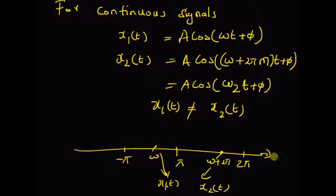To summarize: for discrete sinusoids, when you replace the frequency with the same frequency plus a multiple of 2π, the value of the signal does not change. However, for continuous sinusoids, when you replace the frequency with the same frequency plus 2πm, the signal is different — that is, the frequency changes. Thanks for watching.